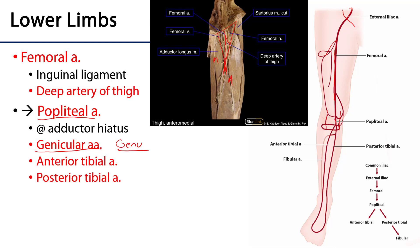Continuing down inferiorly through the popliteal fossa, that popliteal artery is going to divide into an anterior tibial artery and a posterior tibial artery. Those are the terminal branches of the popliteal artery: anterior and posterior tibial arteries.